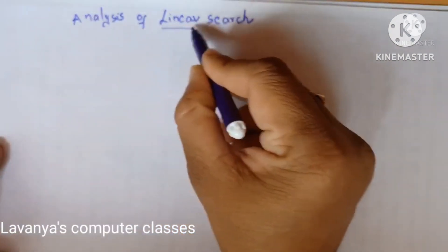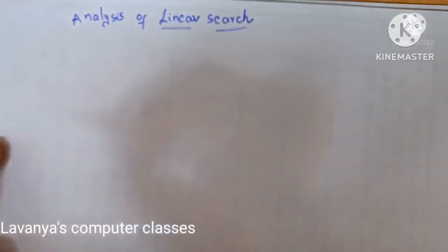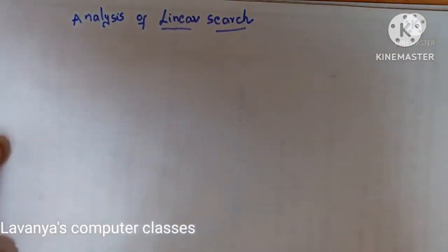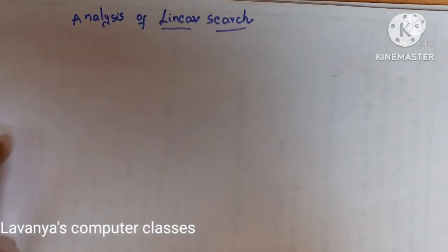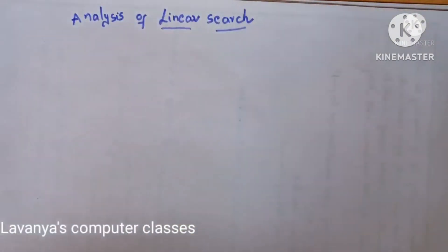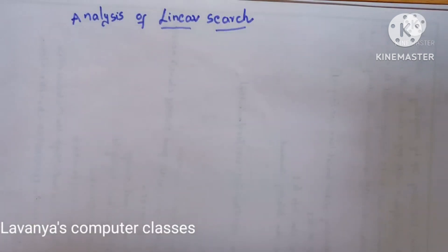So what is a linear search? Linear search means it is searching the element. Linear search is used for searching an element in the given list.